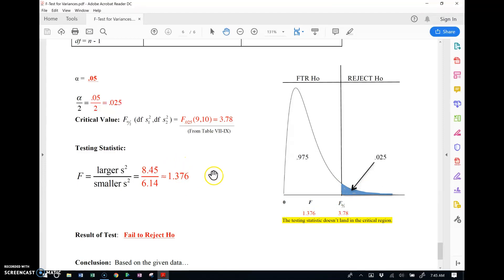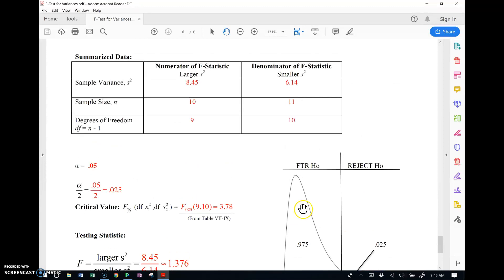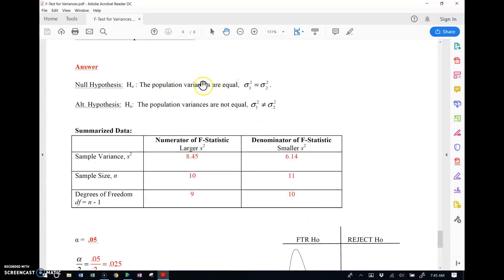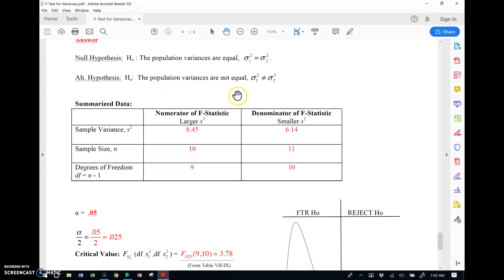Alright, so this test is pretty easy. I looked up the F-critical value in the table, 3.78. This ratio was 1.37 approximately. Clearly it doesn't land in the critical region, so this is a fail to reject scenario. So we fail to reject that the population variances are equal, so therefore this guy could go ahead and assume he could use the two sample t-test for equal population variances.